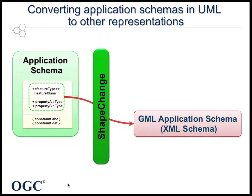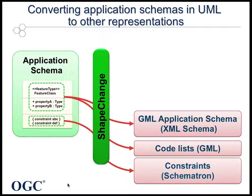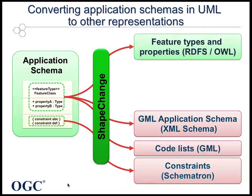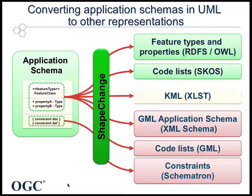Other schema automation work in OWS8, where application schemas in UML were converted to other representations, were conversion to RDFS, OWL and SCOS as part of the semantic mediation activity, and conversion to KML and XSLT transformations as part of the KML portrayal activity.